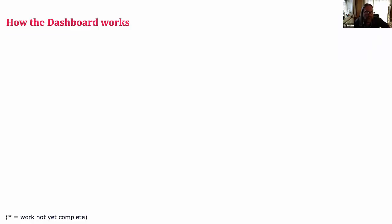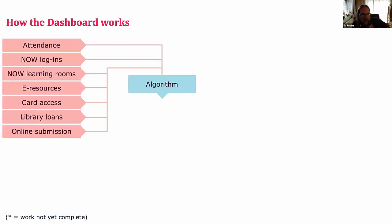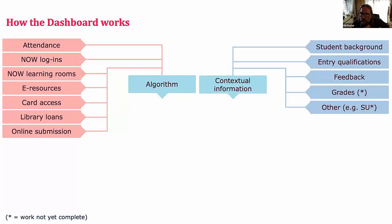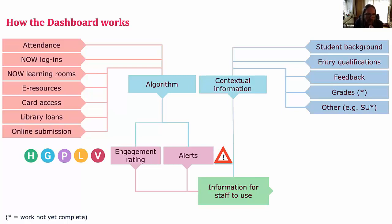The dashboard works in the following ways: we draw data in from seven points — attendance, logins to our VLE, e-resources, etc. — and this information gets pushed into an algorithm. We also show some contextual information, and we often show less than is available within the institution for fear of stereotyping and for fear of overwhelming staff. There's a constant discussion and debate around where the right balance of showing that information is. Overnight, every student's data gets pushed through and processed through the algorithm, and every student gets a daily engagement rating: high, good, partial, low, and very low. It also generates an alert, which is the focus of what Becky will talk about.